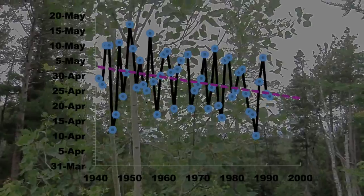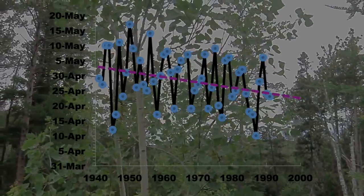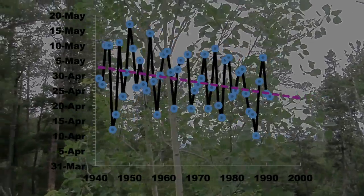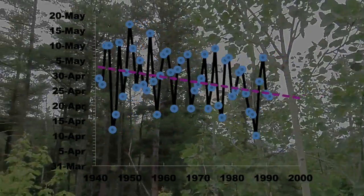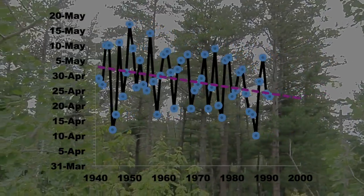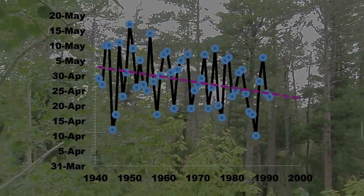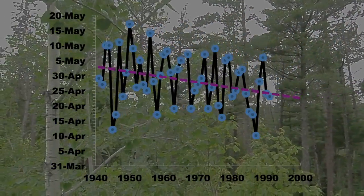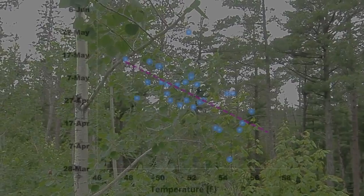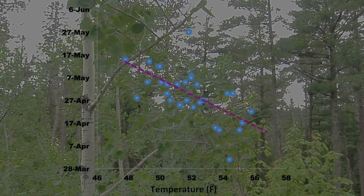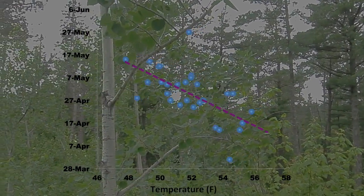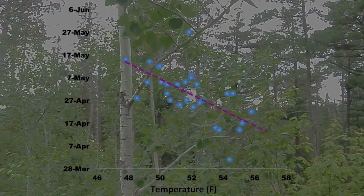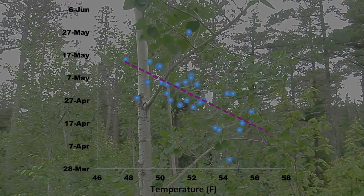Here's a similar example of citizen-collected data in St. Paul on the leaf out of trembling aspen, one of Minnesota's most popular tree species. Again, we see leaf out earlier over time, and when scientists model these data with climate, we can see a direct correlation of earlier leaf out with warming temperatures.